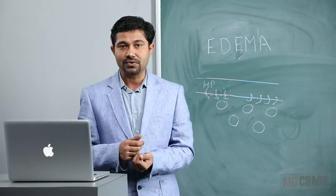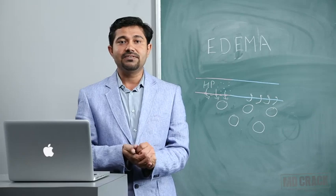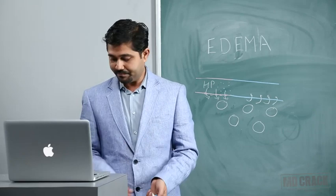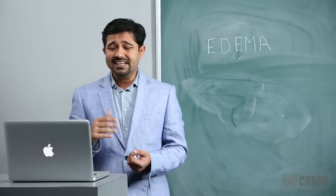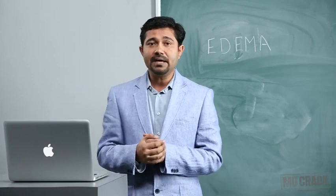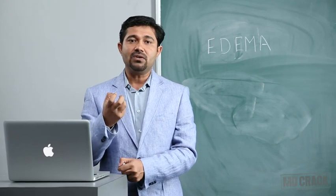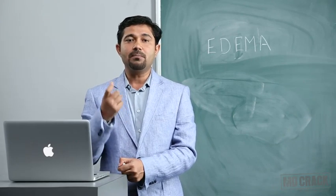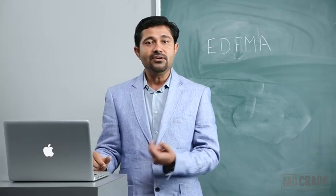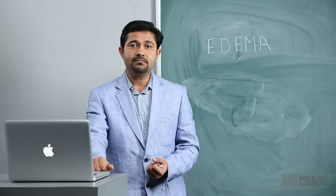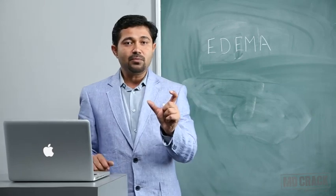Now let us look at the causes of intracellular edema. First: decreased metabolic activity. Next: hyponatremia. Next: inflammation. For decreased metabolic activity — the cell membrane has an active pump that depends on oxygen supply, called the sodium-potassium ATPase pump. Its function is to take three sodium ions from inside the cell and put them outside in exchange for two potassium ions, using ATP.